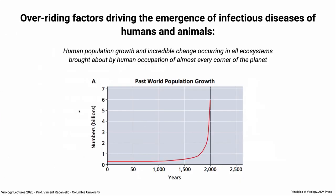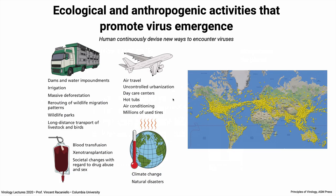The biggest overriding factor driving the emergence of infectious diseases — not just in us, but in animals as well — is human population growth, as evidenced by this graphic showing numbers shooting into the billions quite recently. Accompanying this population growth is amazing change occurring in all ecosystems as we inhabit every corner of the planet, introducing changes that alter the ecology and making encounters with viruses more and more frequent.